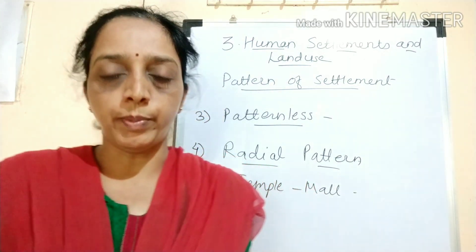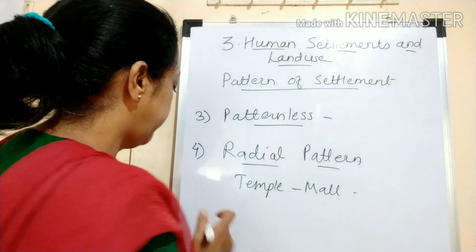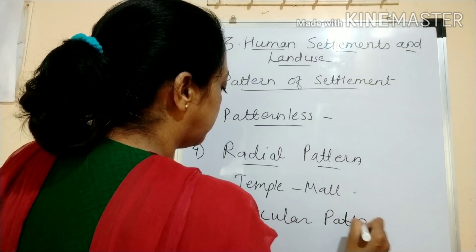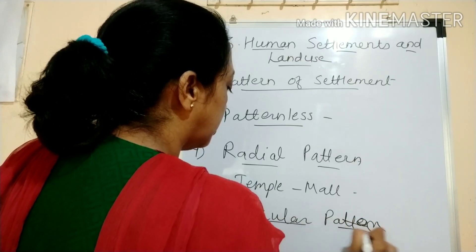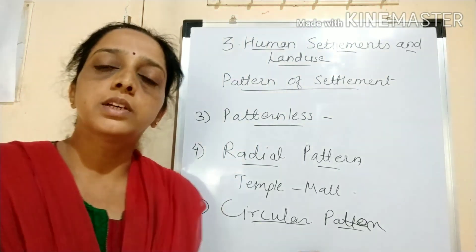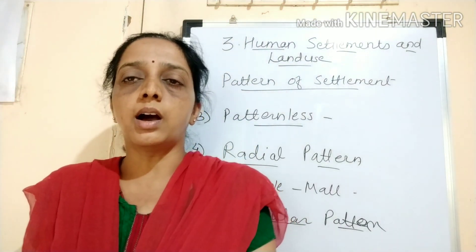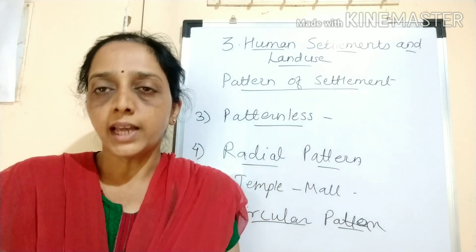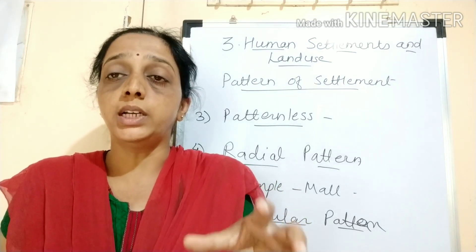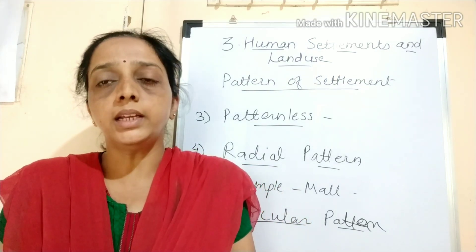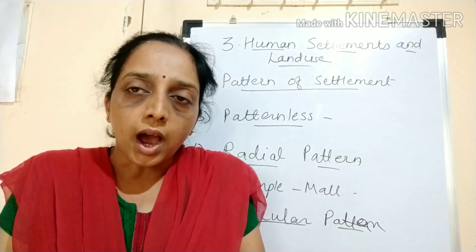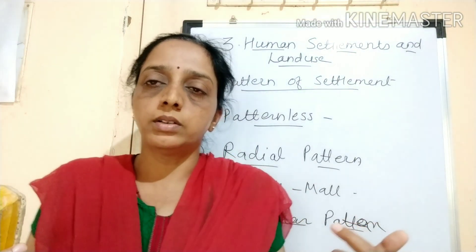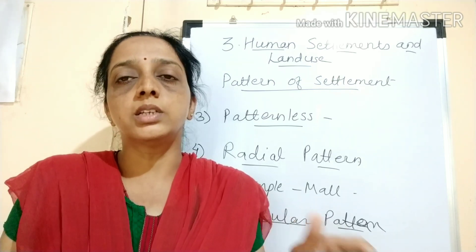Another pattern is circular pattern. The circular pattern itself gives us the idea that the settlements are in a circular shape. In the middle there can be a lake, a well, or any object which is important. After that, when the settlements are located, we see these settlements in the circular shape. So that is called circular pattern.